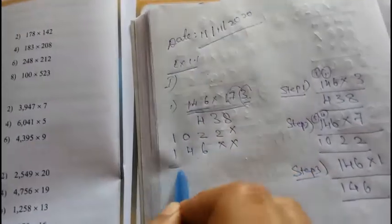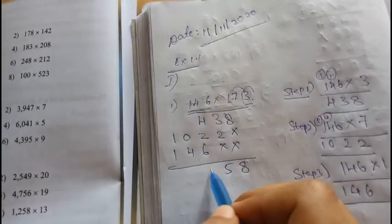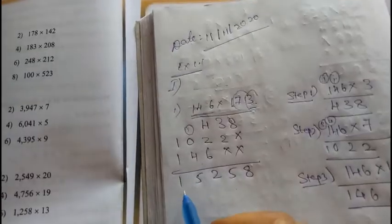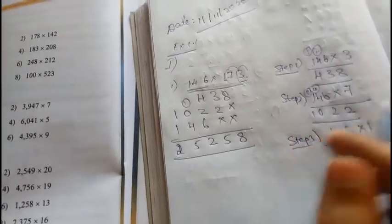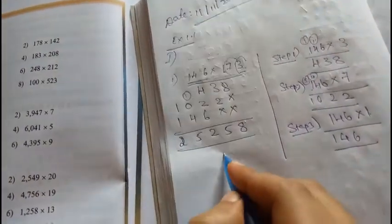Multiplied by 1 will get the same answer 146. So write here 6, 4, 1. Now you need to add: 8, 5, 12, 1 carry, 5 and 1, 1 plus 1 is 2. This will be the answer. This is the rough work, this is the final answer.